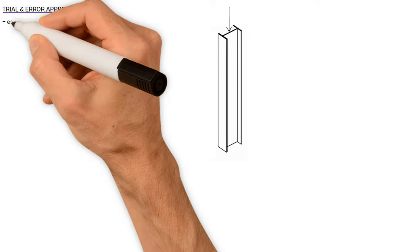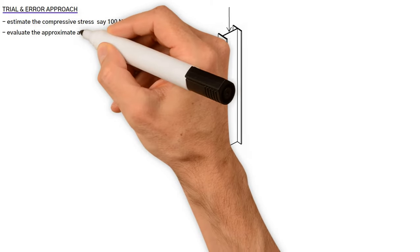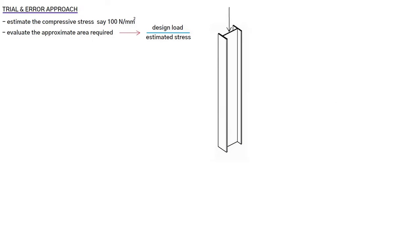First, we estimate the compressive stress in the column, let's say 100 N per millimetre squared, and evaluate the approximate area required which equals design load divided by the estimated stress.